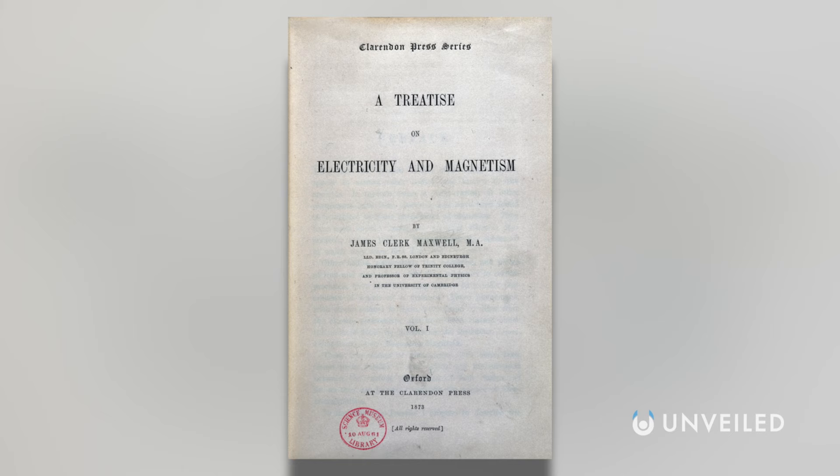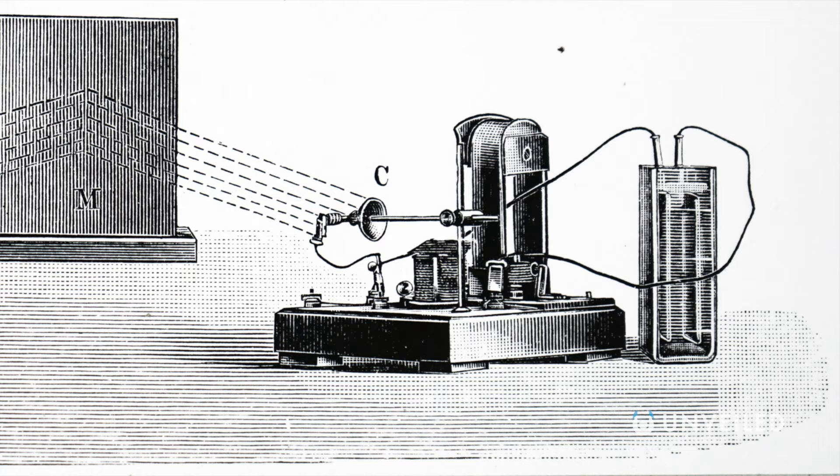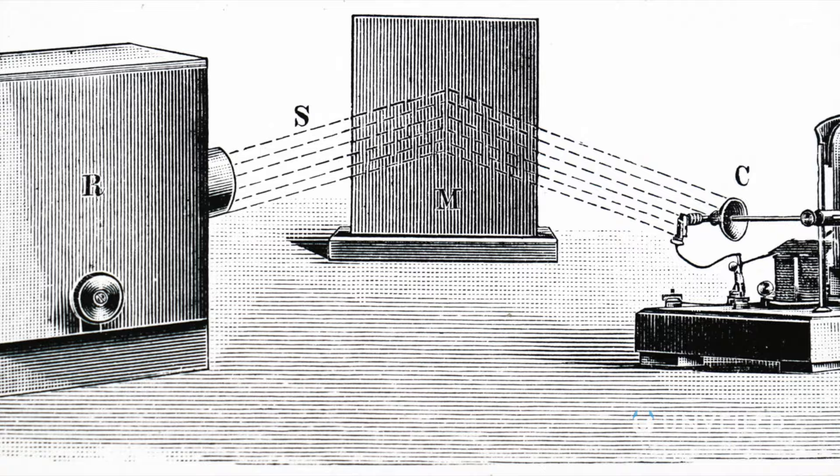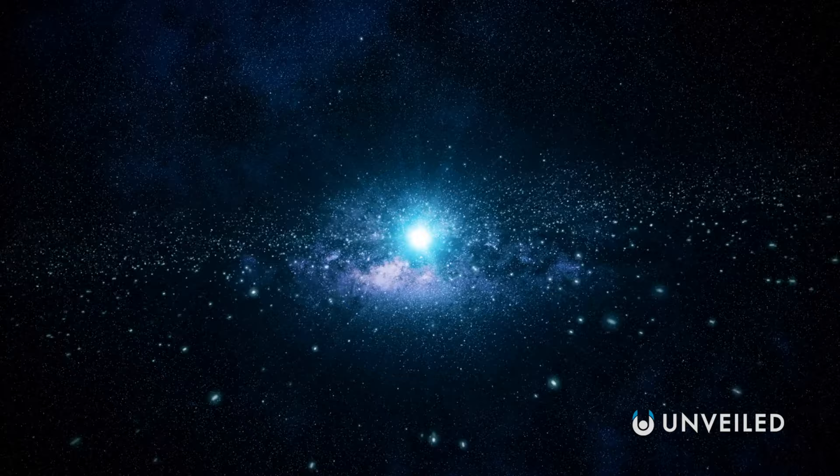He unified electricity and magnetism, discovering that they were two sides of the same phenomenon, and that they traveled through space as waves at the speed of light. Maxwell's discovery had serious implications across physics, and Maxwell himself pondered whether we can similarly describe gravity via fields.